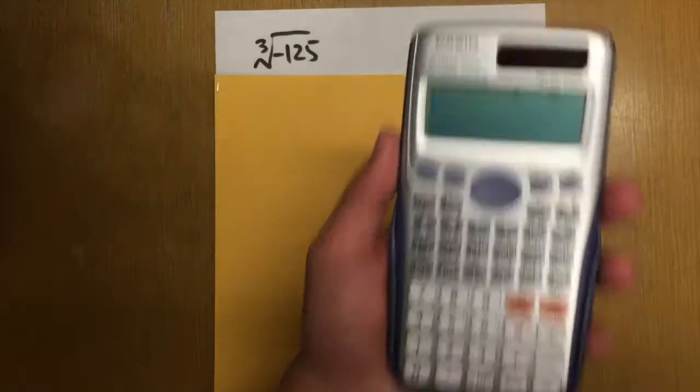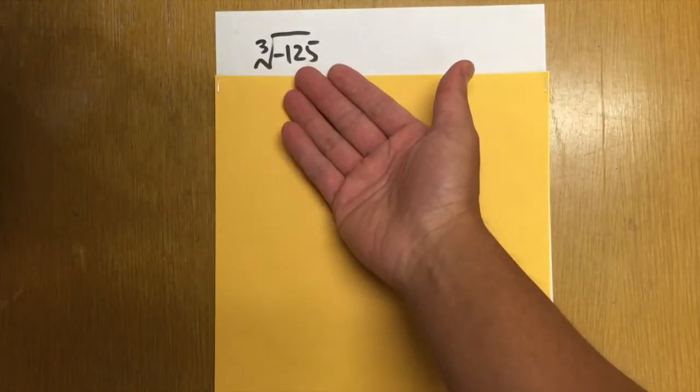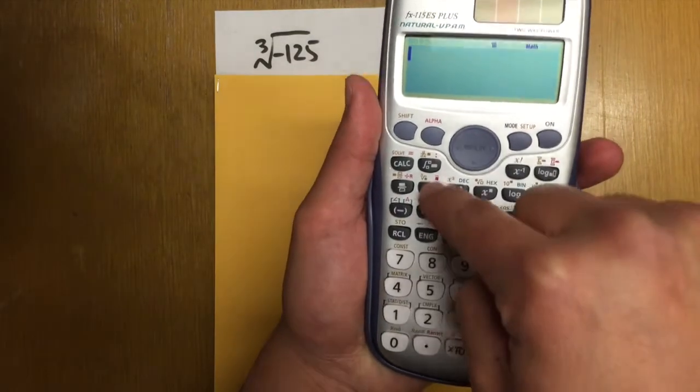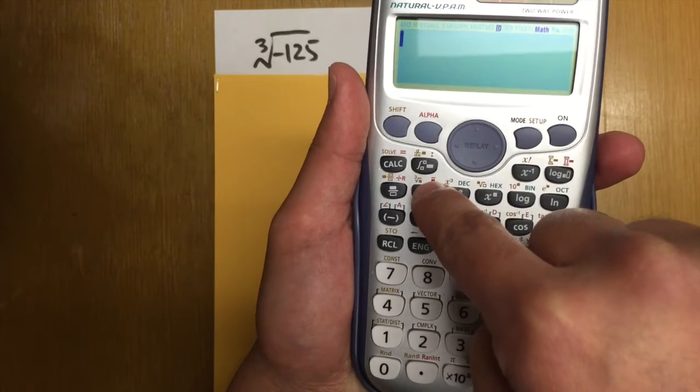Here are the bonus features. First of all, how can we enter a cube root? So let me show you. Here is the square root key, right? And then you see that we have the cube root symbol here.